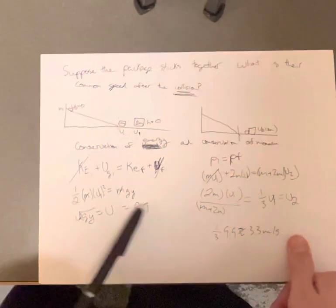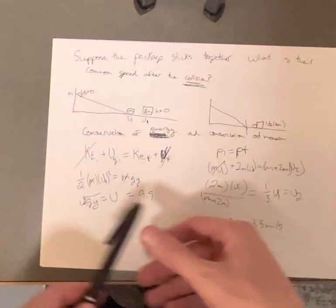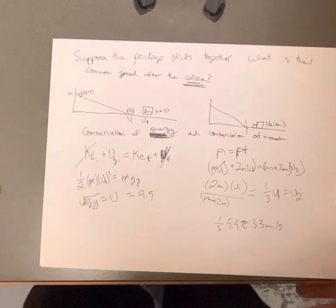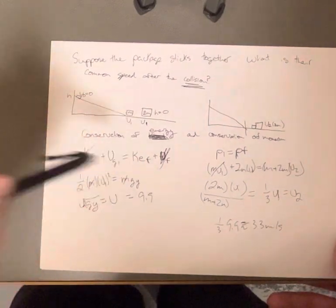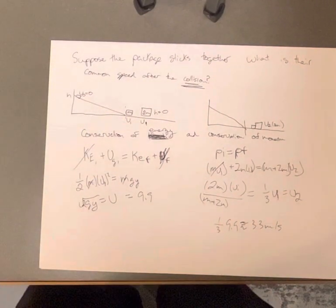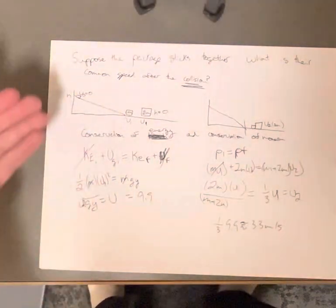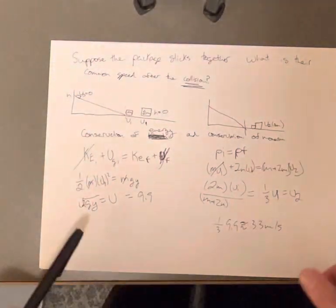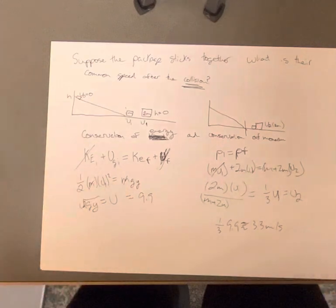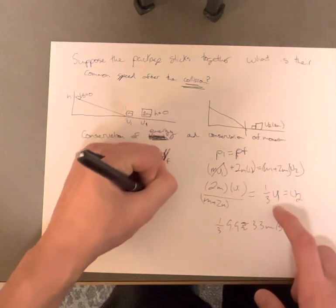We solve it out, cross the M's out, multiply by two, take the square root, and we can find our velocity. Y, remember, was 5 meters tall. Using this, we get 9.9 meters per second.